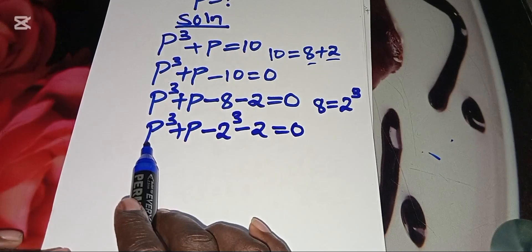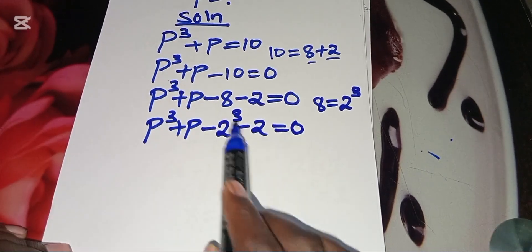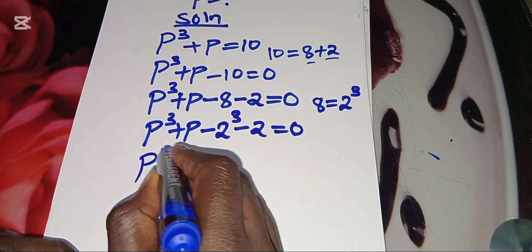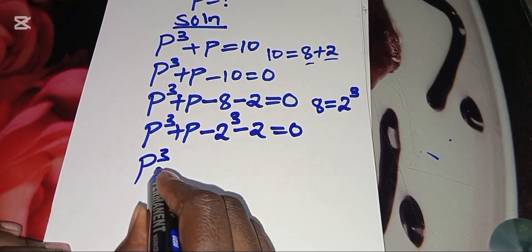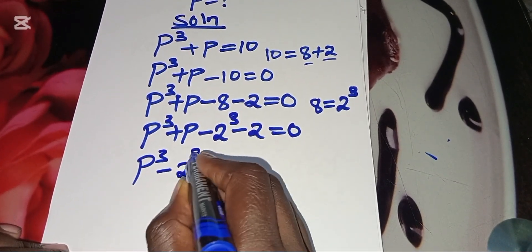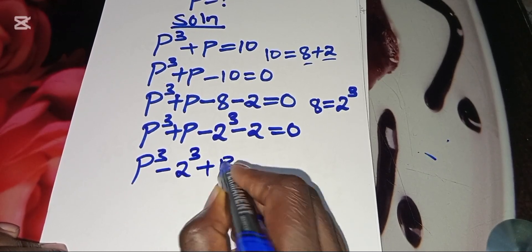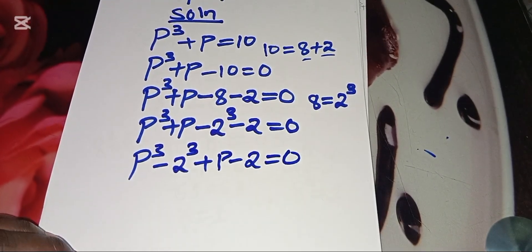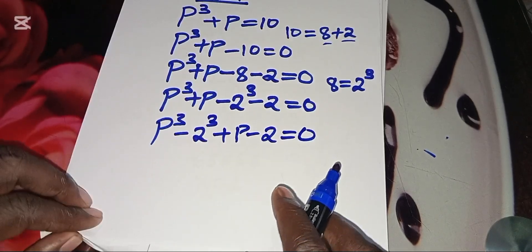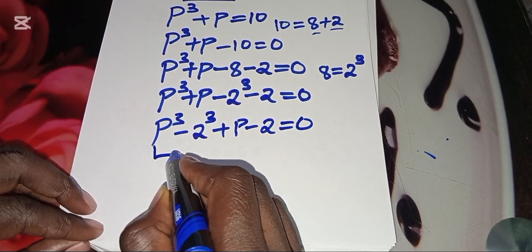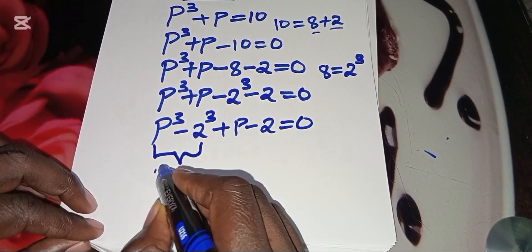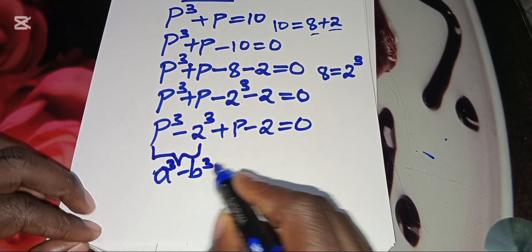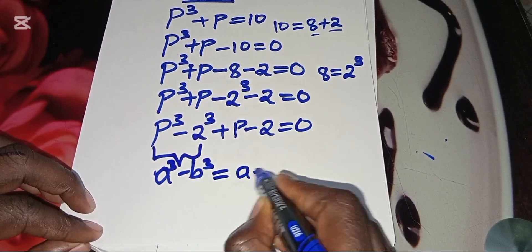Now we can combine P raised to power 3 and 2 raised to power 3 because they have common powers, so we're going to have P raised to power 3 subtract 2 raised to power 3, plus P subtract 2, equal to 0. As you can see, this part here is actually the difference of two cubes.